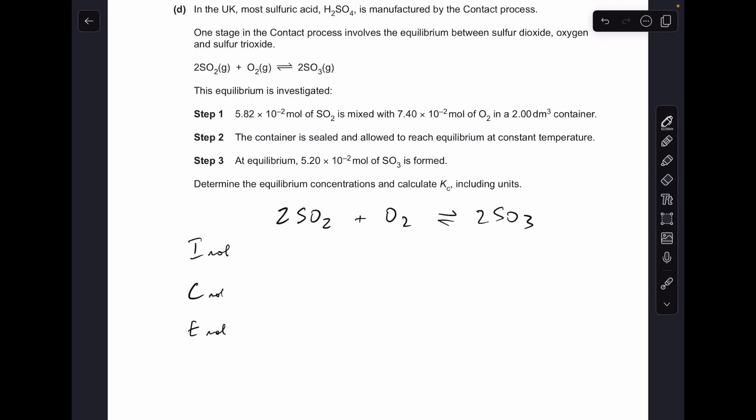Moving on to part D, so I call this type of calculation an ICE calculation, so we're going to look at the initial moles, the change in moles, and the equilibrium moles. So initially we've got 5.82 times 10 to the minus 2 moles of SO2 and 7.4 times 10 to the minus 2 moles of O2.